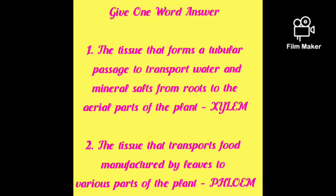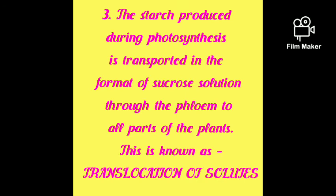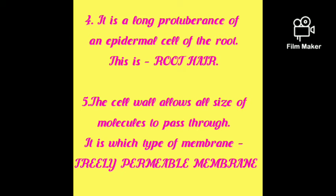Both xylem and phloem come under the vascular tissues. Number three: the starch produced during photosynthesis is transported in the format of sucrose solution through the phloem to all parts of the plant. This is known as translocation of solutes. Number four: it is a long protuberance of an epidermal cell of the root — it is the root hair.